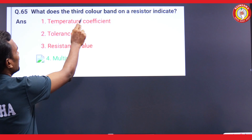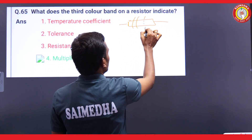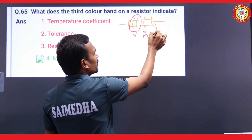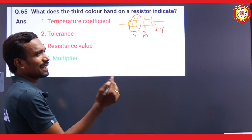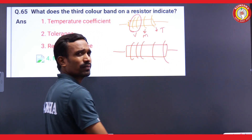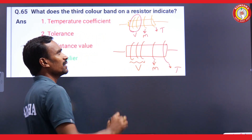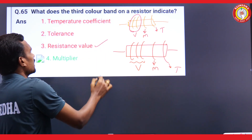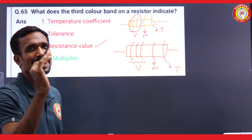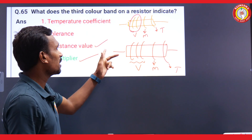What does the third color band of a resistor indicate? If you have a four-band resistor, the first two bands show the value, the third is the multiplier, and the fourth is the tolerance. If you have a five-band resistor, the first three bands show the value, the fourth is the multiplier, and the fifth is the tolerance. So, what does the third band indicate? There is no clarity — depending on whether it is a four-band or five-band resistor, the answer differs. This gives multiple correct answers.